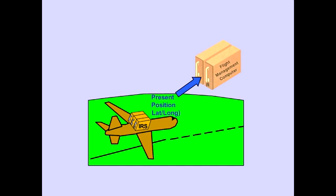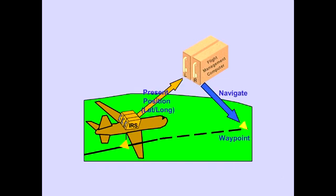The IRS also provides present position to the flight management computer in terms of current latitude and longitude. Flight management computers use the position information for navigating to the flight plan waypoints. The flight management computer position is covered in the flight management system introduction module.